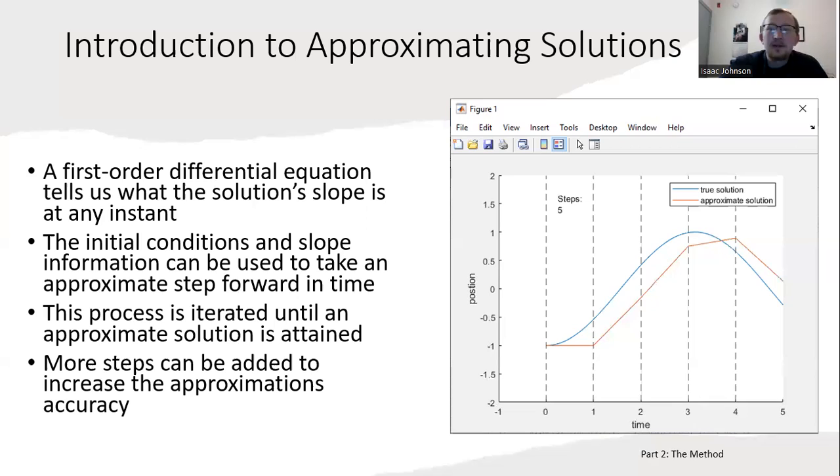This approximate solution doesn't look great, but we only took five time steps. If we took 10, looks a little bit better. 20 steps—now it's visually pleasing, the approximate solution looks pretty smooth. And with 50 steps, visually they're very close now.